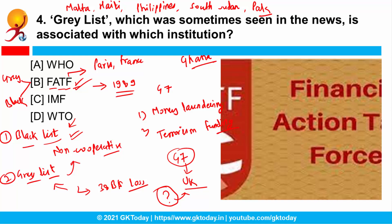Whenever FATF places a country on the grey list, it means that country is subject to increased monitoring. FATF is a global watchdog for money laundering and terror financing.